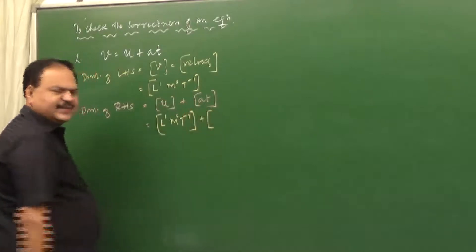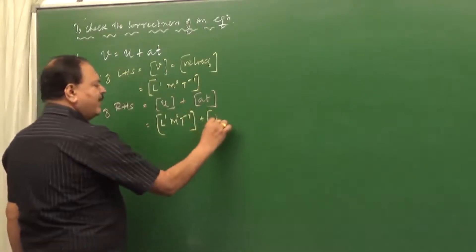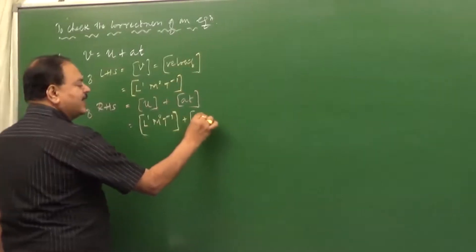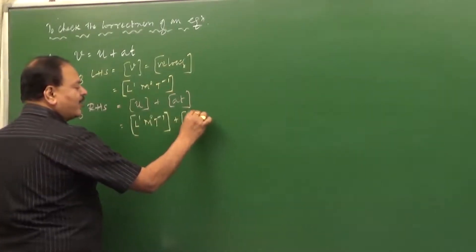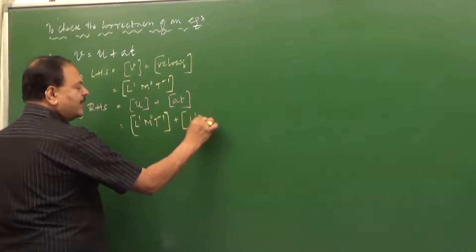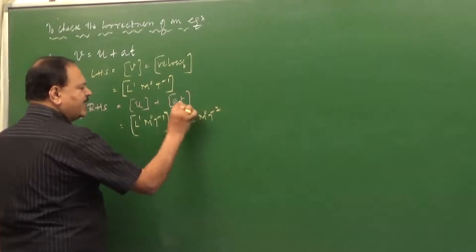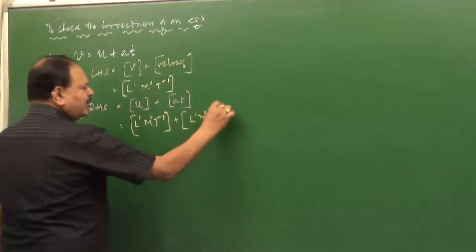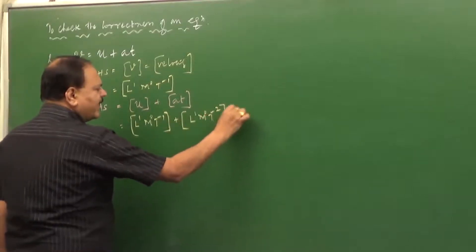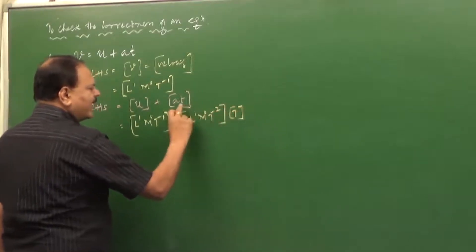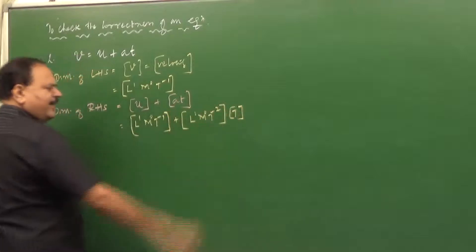Next, A is the acceleration. The dimensional formula of acceleration is L¹M⁰T⁻². Remember, acceleration equals 1 in length, 0 in mass, minus 2 in time. This acceleration is multiplied by T, which is time.